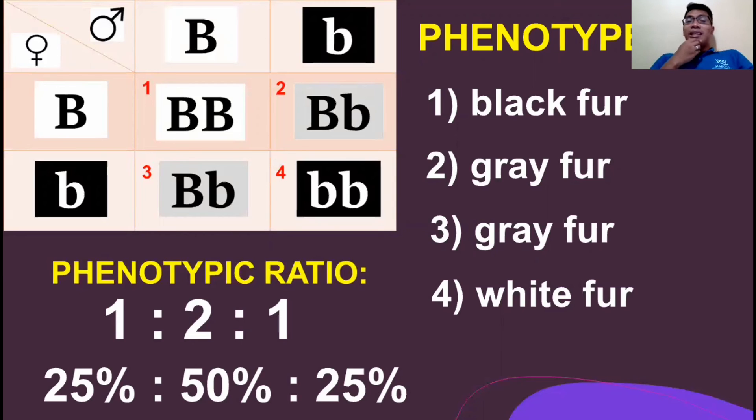So anong ibig sabihin nito? It only means that every time the two grey rabbits will breed or produce offspring, there will always be a 25% chance that they will produce a black fur baby and another 25% is a white fur baby rabbit. Or there is always a 50% chance of having a grey fur baby rabbit. So ibig sabihin yung mga percentage na to, it represents the probability or chance. Gaano kalaki yung chance na ganito yung magiging kulay ng anak nila. Again, 25% for black, 50% for grey, and 25% for white.